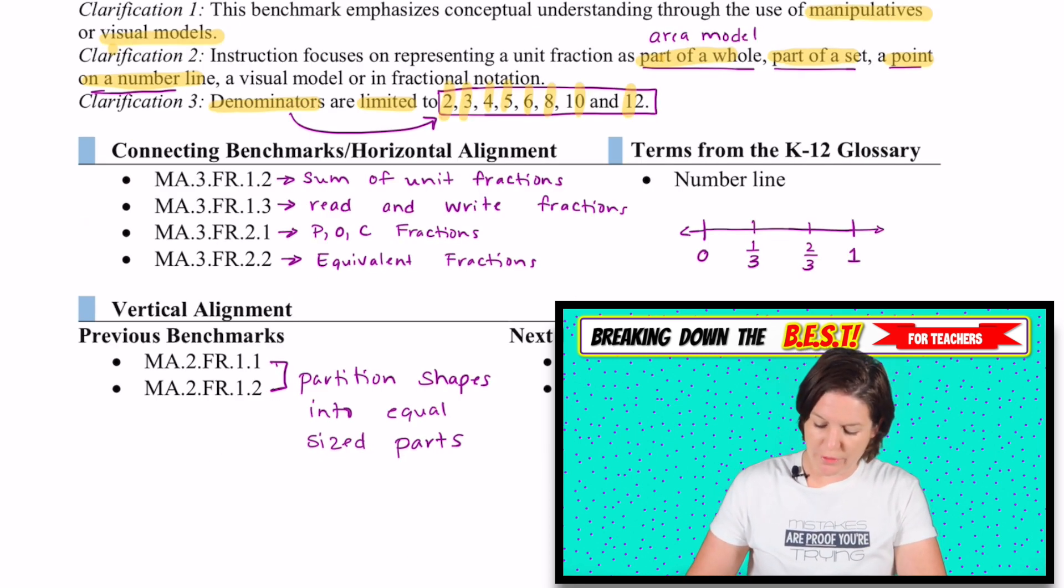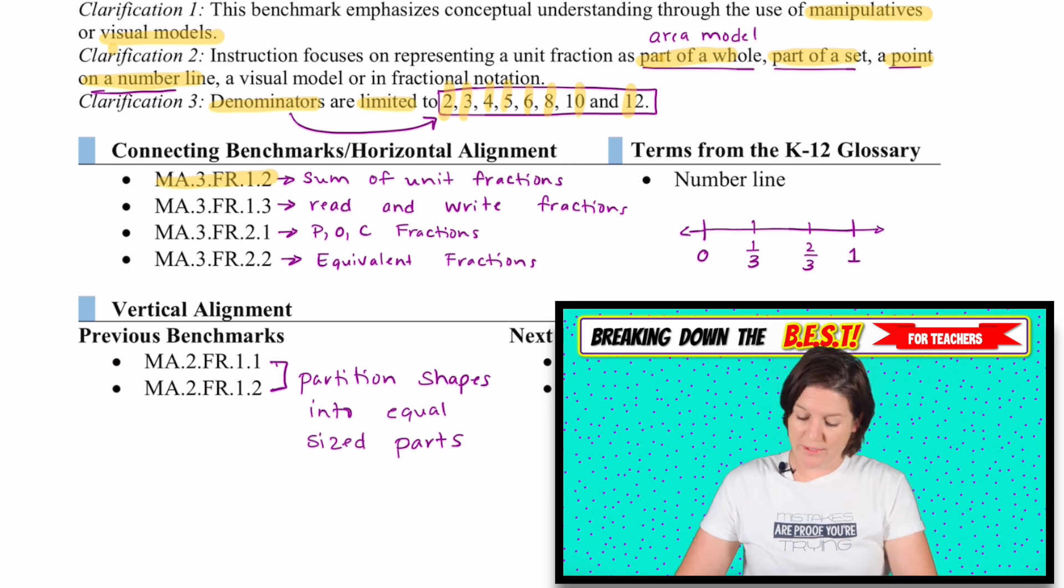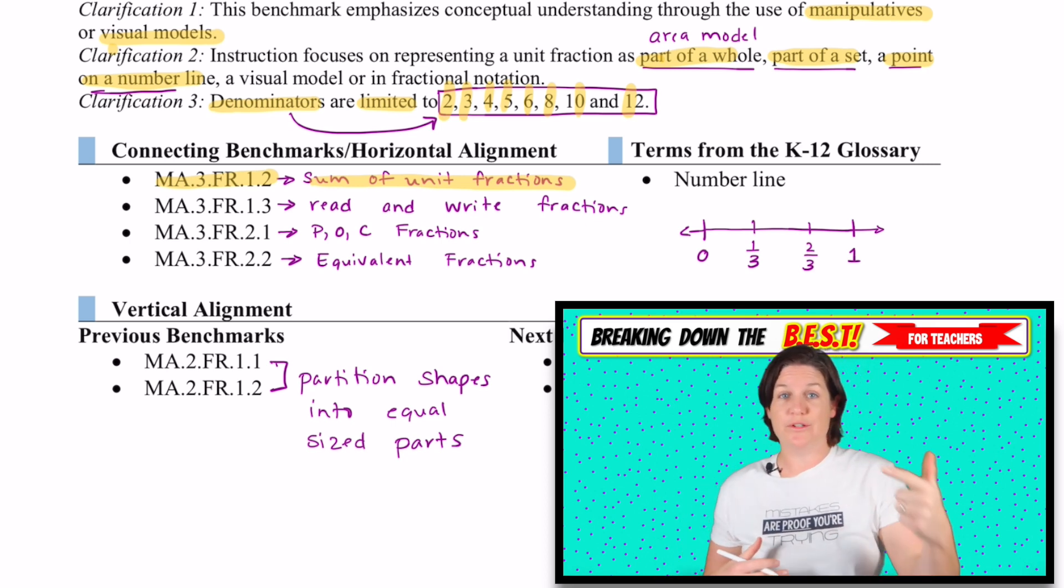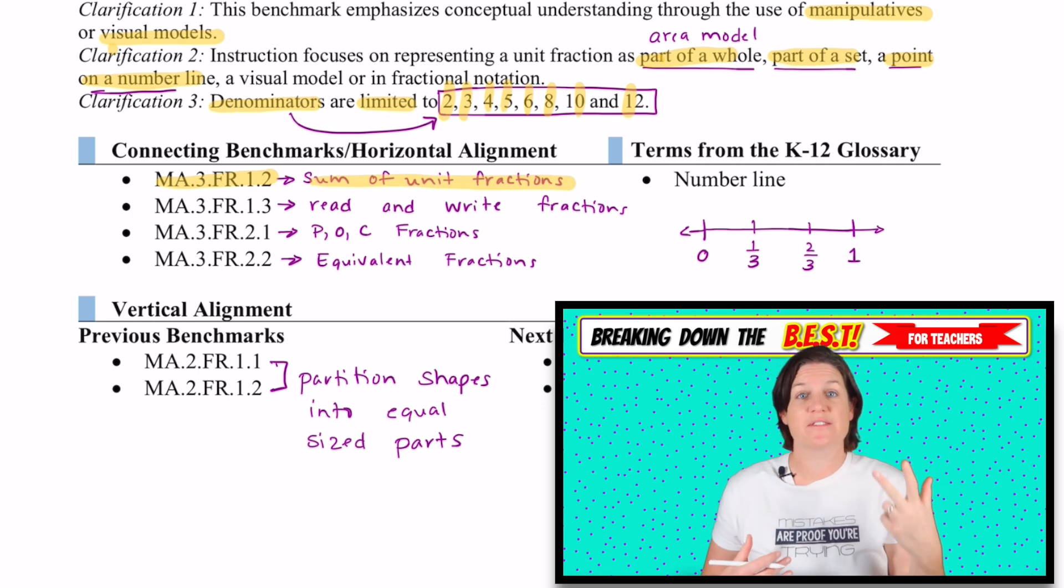What other benchmarks connect to this? Well, MA.3.FR.1.2, the next standard will be the sum of unit fractions. We're talking about unit fractions specifically in this standard, and in the next standard, we'll practice adding those fractions. That three-fourths is equal to one-fourth plus one-fourth plus one-fourth, the sum of unit fractions. That's the next standard.